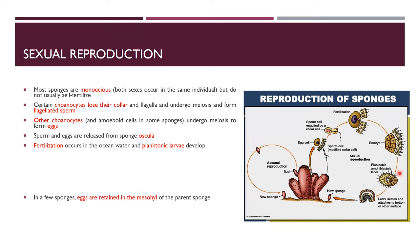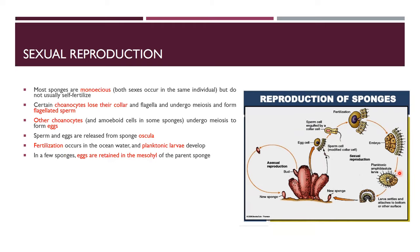In a few sponges, eggs are retained in the mesohyl of the parent sponge. Sperm enter through incurrent water currents and are trapped by choanocytes, then transferred to the mesohyl for fertilization.